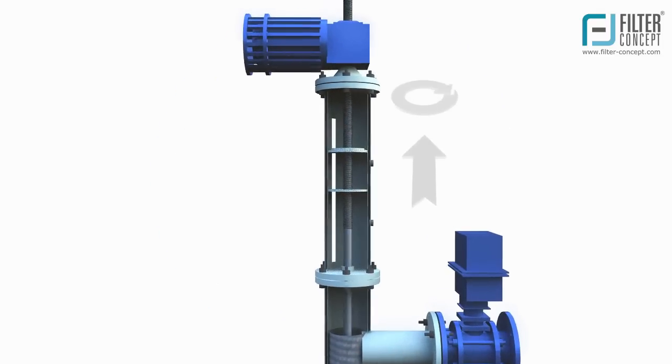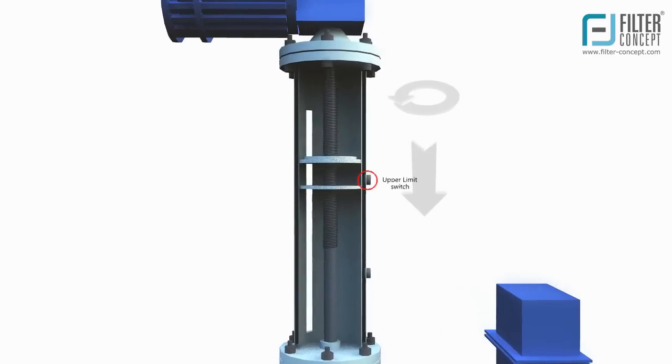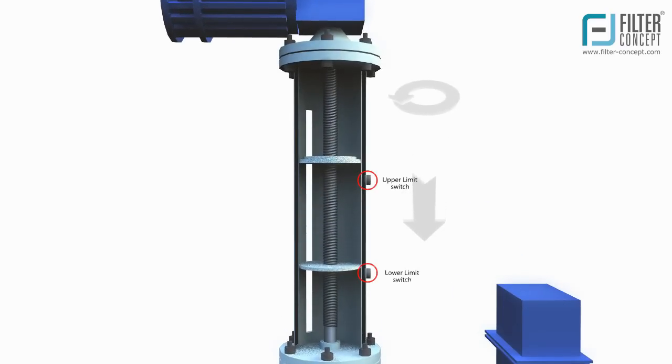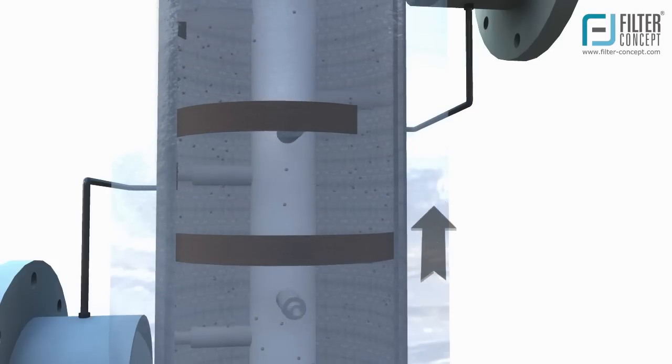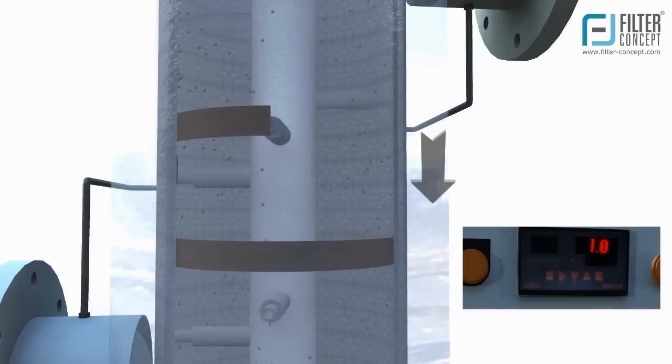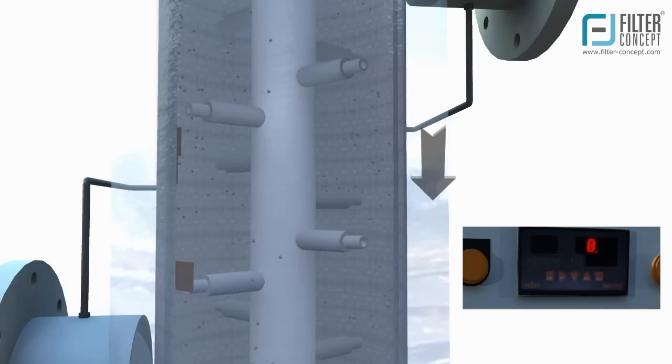The center pipe rotates with the help of geared motor at defined speed. It rotates inside the surface of filter element, and moves upward and downward to ensure proper cleaning of filter element throughout the area.